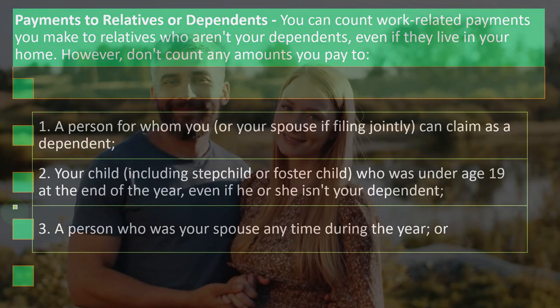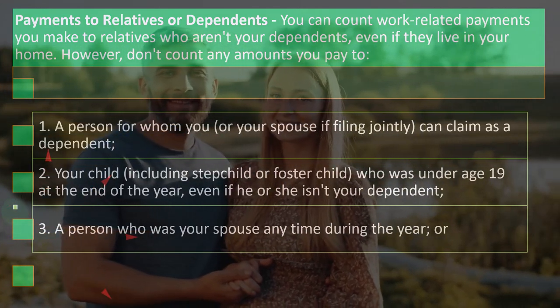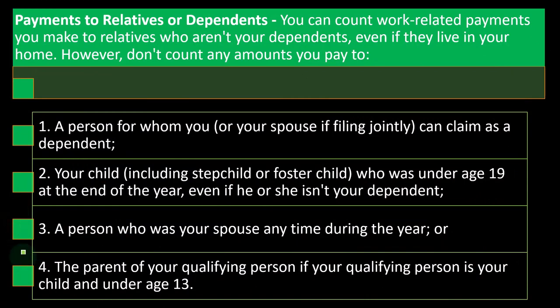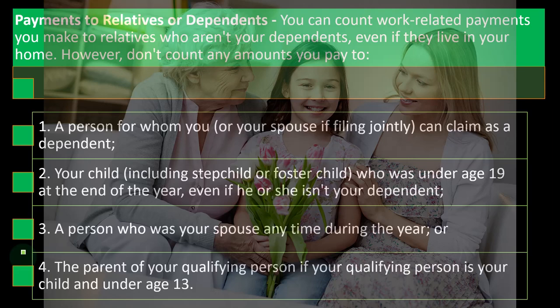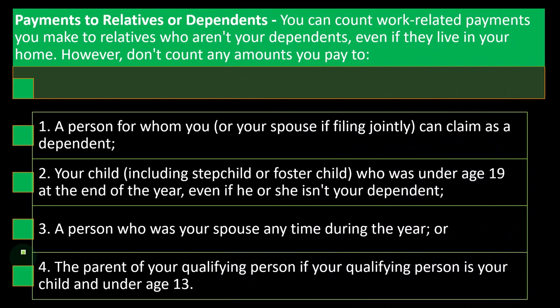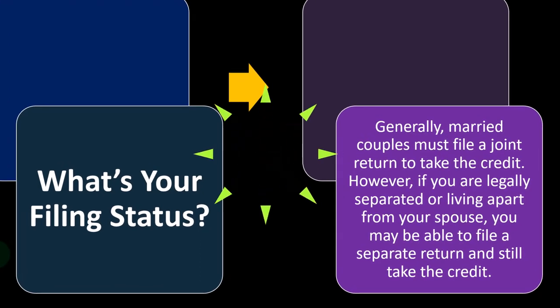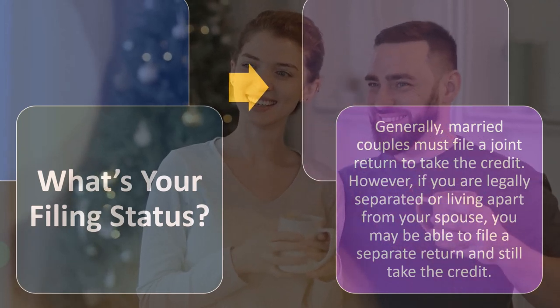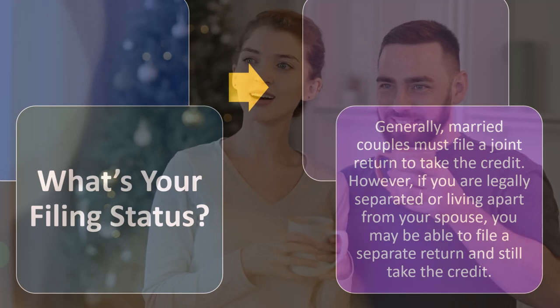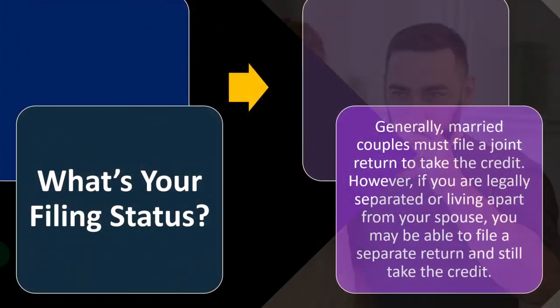Three, a person who was your spouse at any time during the year; four, the parent of your qualifying person, if that qualifying person is your child and under age 13. Regarding filing status: generally, married couples must file a joint return to take the credit. If you file married filing separately, you often lose out on these credits, as the IRS is skeptical of people using married filing separately to maximize credits.